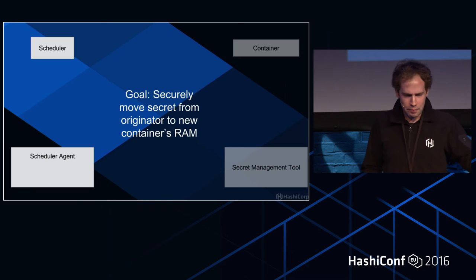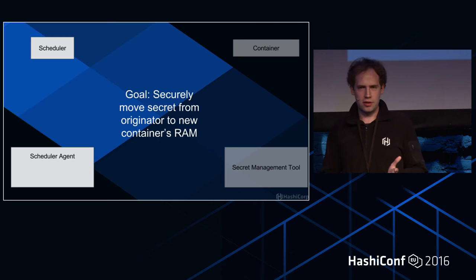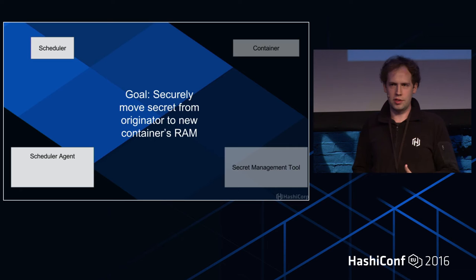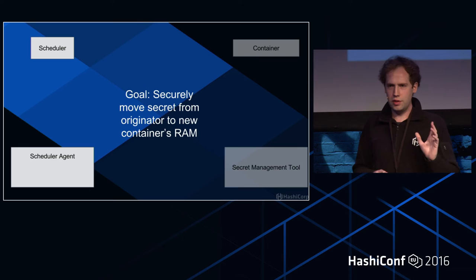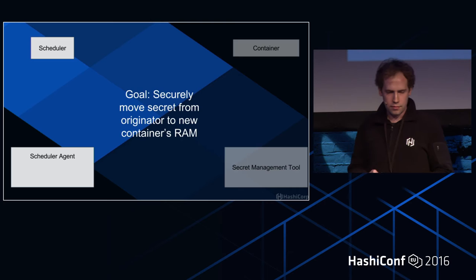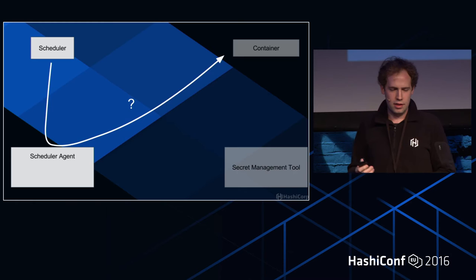Here's an example goal. We have a scheduler and a scheduler agent — anyone running containers at scale is probably running an orchestration tool or a scheduler. We want to get a secret from the originator — scheduler or scheduler agent — to the new container's RAM. The secret management tool we trust, the scheduler agent we're going to trust maybe, and we trust the container's RAM. But what does it look like? Does it go from scheduler to agent to container? From the secret management tool to an agent? We have to figure this out.